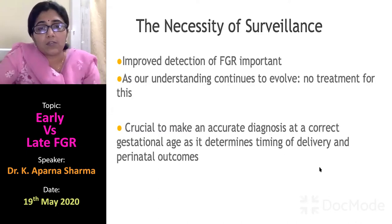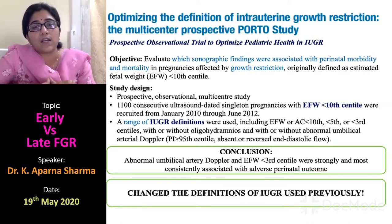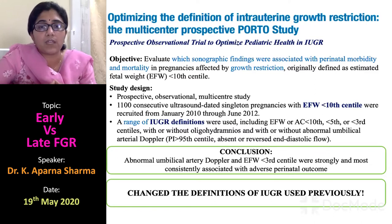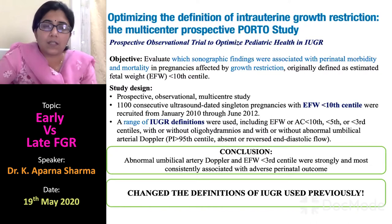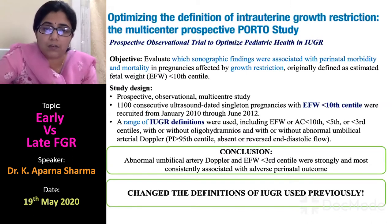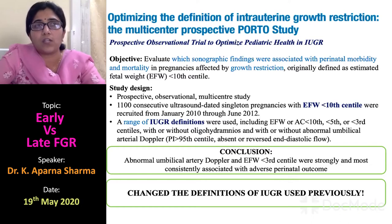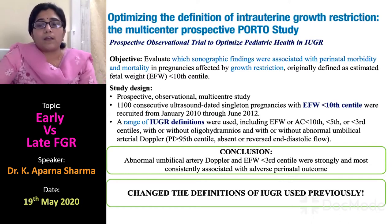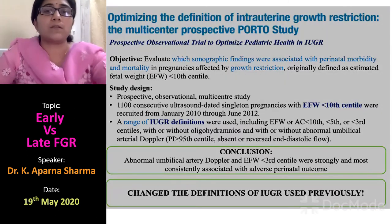The most important aspect of understanding FGR developed after one very important study. Before that, many definitions were floating about for fetal growth restriction. After this study, it was seen that a baby under the third centile with an abnormal umbilical artery Doppler was consistently associated with adverse perinatal outcomes. This is the point where the definition of IUGR came in.